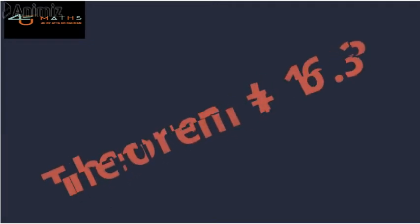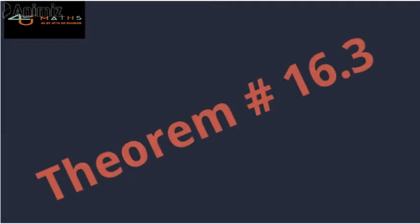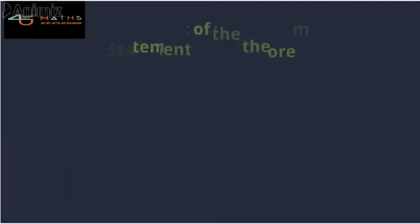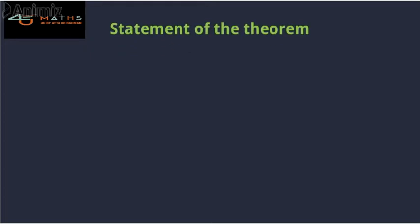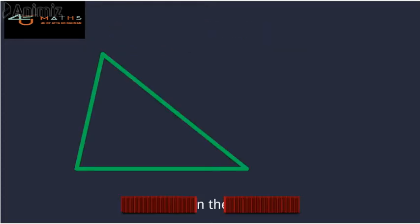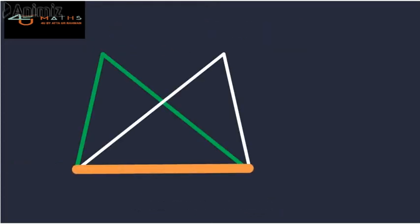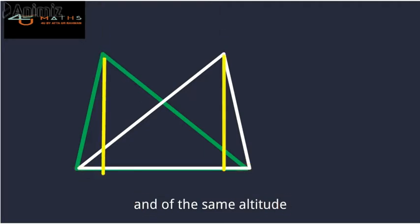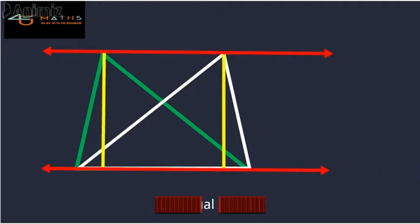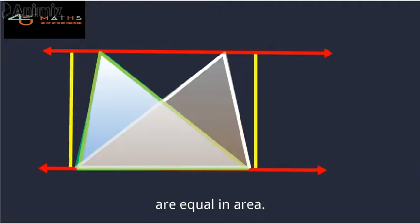Theorem 16.3. Statement of the theorem: Triangles on the same base and of the same altitude are equal in area.